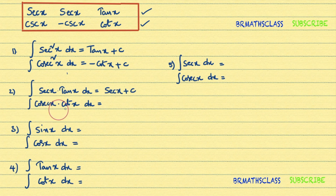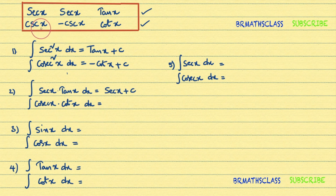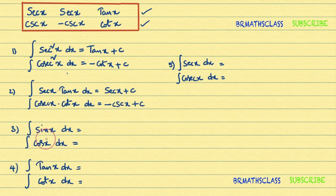The fourth formula: integral of cosecant x times cot x dx. Observe the table: cosecant x, cot x already present — what is remaining? Minus cosecant x. So integral of cosecant x times cot x dx is minus cosecant x plus C. You already learned four formulas.